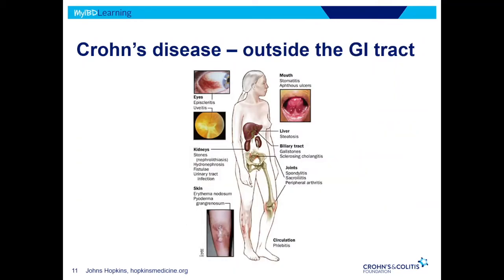Unfortunately, Crohn's disease can cause problems outside of the GI tract as well. The questions we ask in clinic are: do you have any eye problems, oral problems, skin problems, or joint problems? Those are the most common places for extraintestinal manifestations. You can get eye inflammation, oral sores, and joint disease and joint pain, which is very common. There are also things like kidney stones that can occur, and an inflammatory condition of the bile duct called primary sclerosing cholangitis. So it can wreak havoc outside the GI tract too, unfortunately.